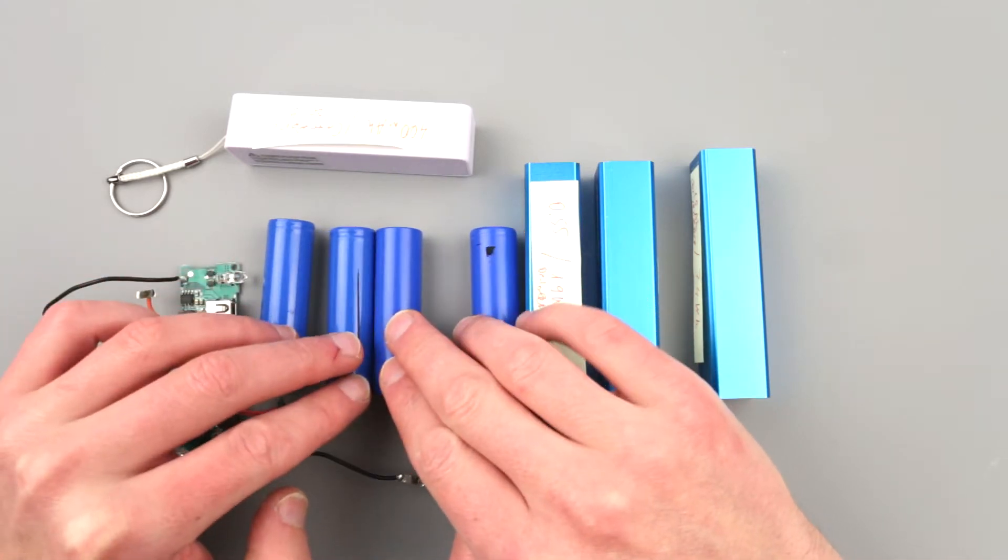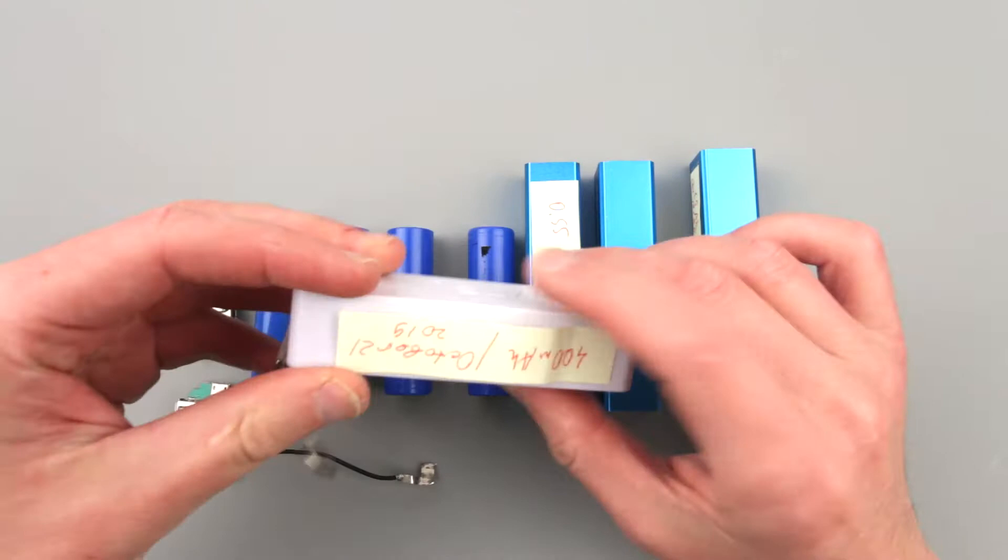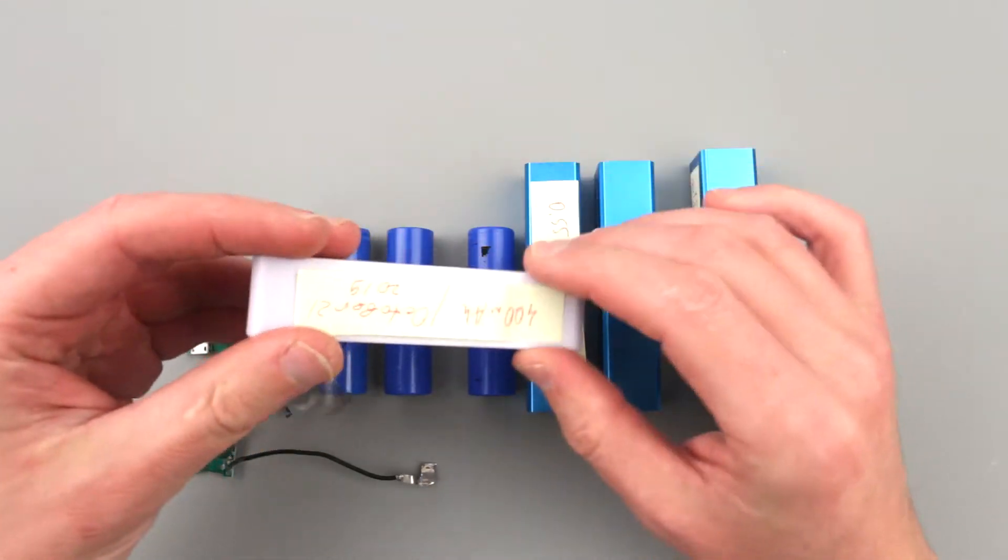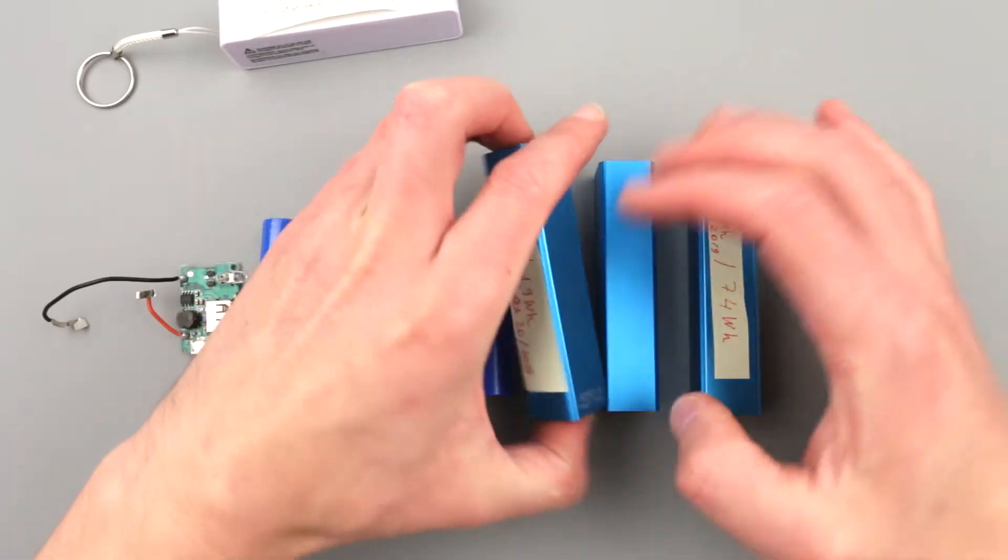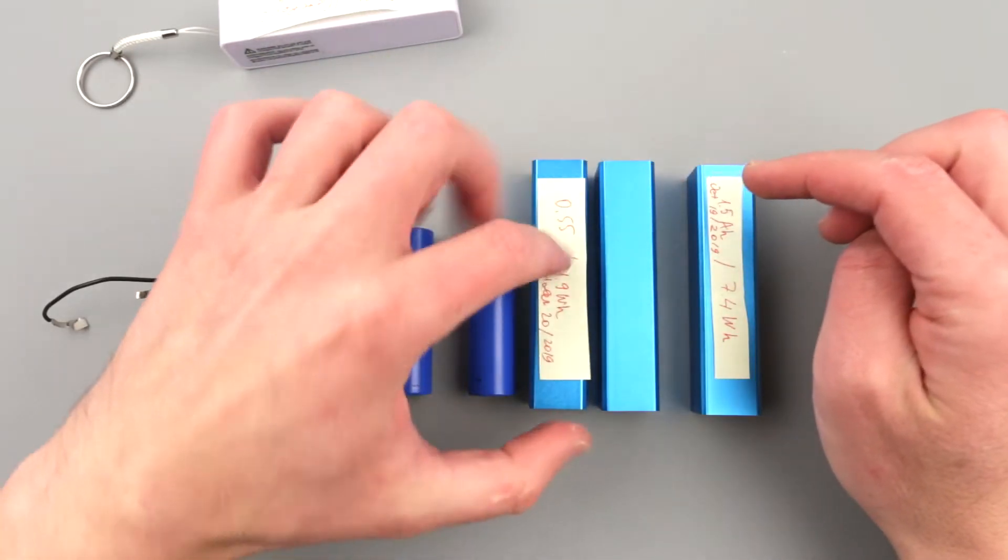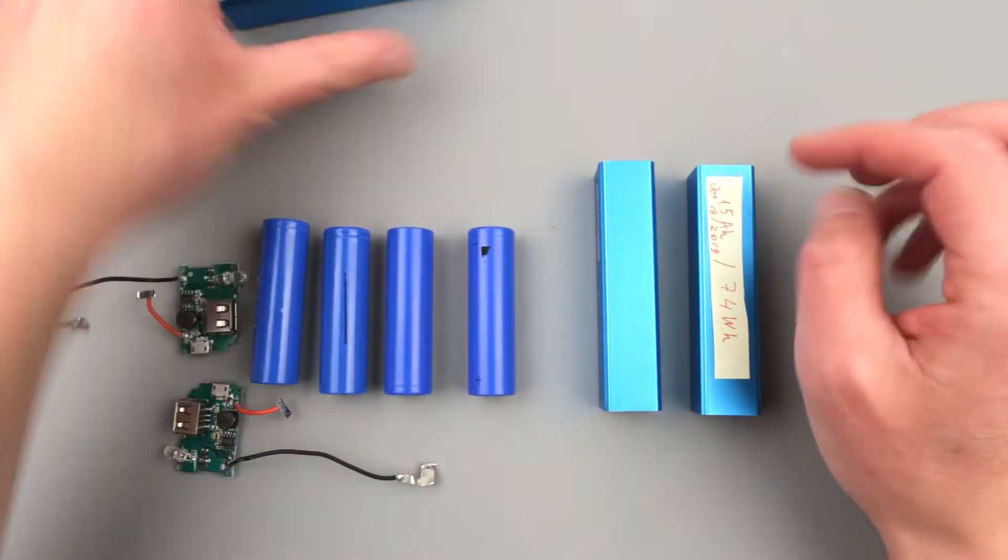Except this one, I still kept it because it's still 400 milliamp hours, so I'm probably not going to pull it apart. These guys are okay, except this one again - 550 milliamp hours is still okay, so we're going to keep this to the side.